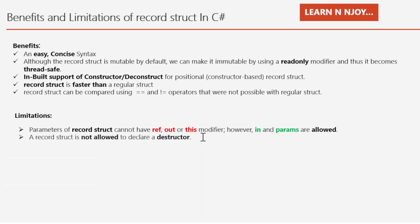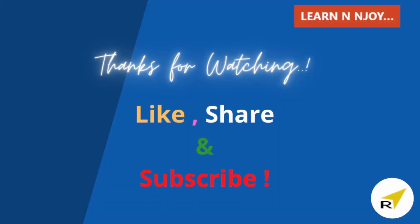To sum up: in this video we saw what a record struct in C# is and how to declare and use it. We saw how non-destructive mutation constructs a new object from an existing one using the 'with' keyword. We covered the deconstruct method, differences between record struct and record class, and benefits and limitations. If you liked this video, hit the like button, share it with friends and colleagues, and subscribe to the channel. Thanks for watching — see you in the next video.